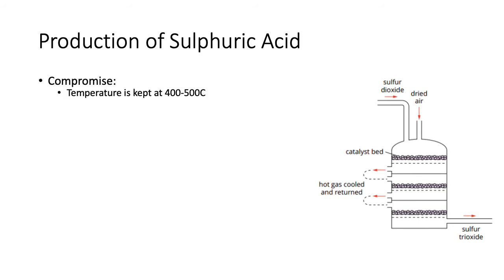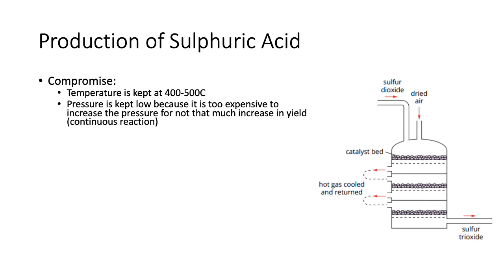However, when they actually do it, the temperature is kept at about 400 to 500 degrees Celsius, because a high temperature gives a high rate but a low yield — you keep testing at different conditions until you find which one produces a nice rate and a nice yield, and that turns out to be 400 to 500°C. The pressure is kept low because it's too expensive to increase the pressure for not that much increase in yield. Because this is effectively a continuous reaction, they can take the unreacted sulfur dioxide and put it back in, so worrying about increasing pressure is not really that much of a benefit.